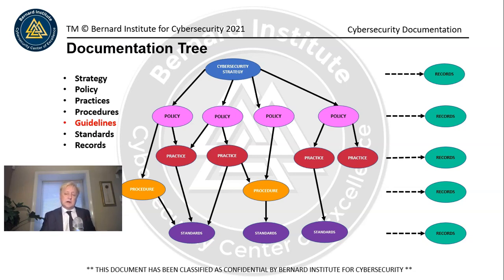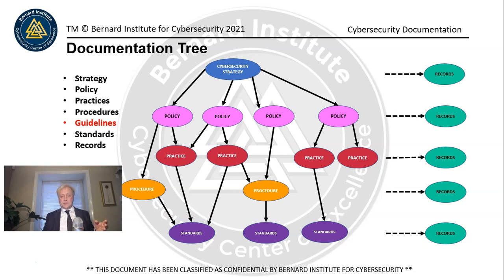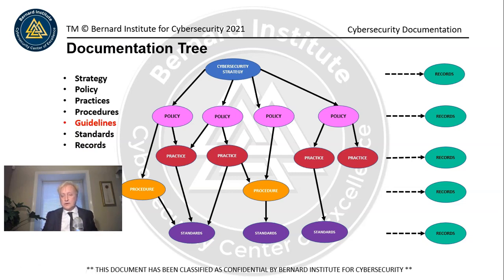So this is documentation. There's strategy, which is like a business plan for the cybersecurity program. There's policies that address high-level risks and help guide the staff. There's practices, which are basically high-level procedures without the step-by-steps. Then you have procedures for organizations with high turnover, to train people on custom activities unique to your organization. Guidelines are refrained on — they're not good for a secure environment because they dumb down a procedure so much that someone with no experience could execute it, which can be dangerous. And then there's standards, which set out requirements for configurations, and records kept as part of the activities when you execute policies, practices, procedures, and standards.